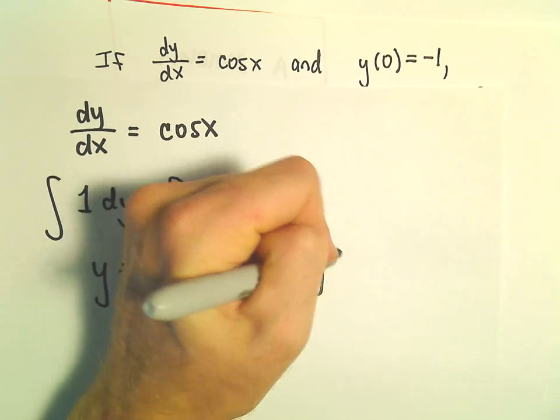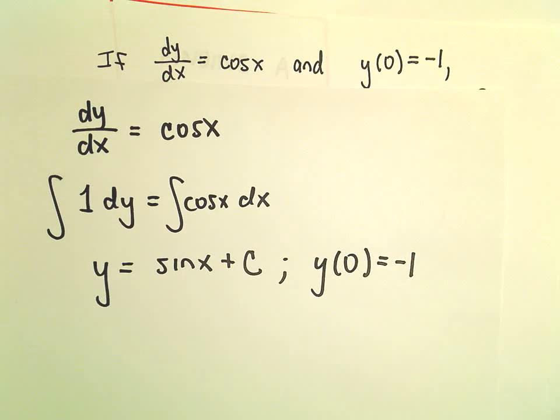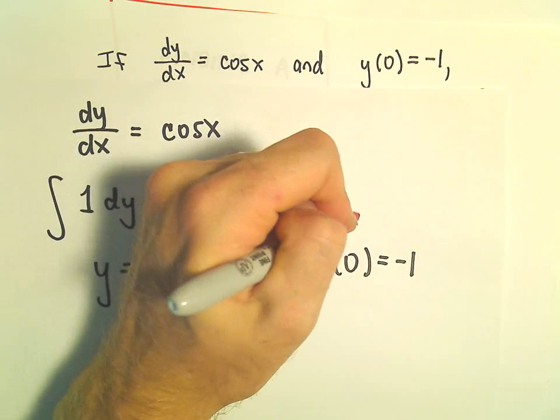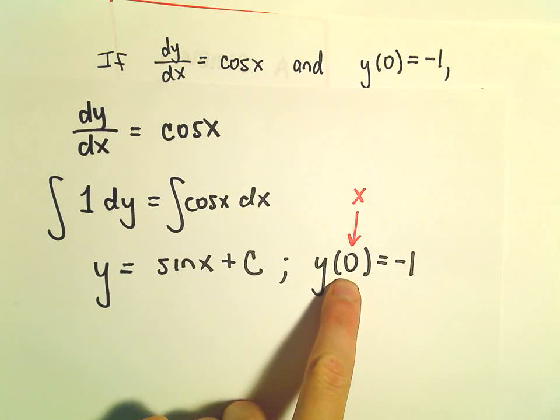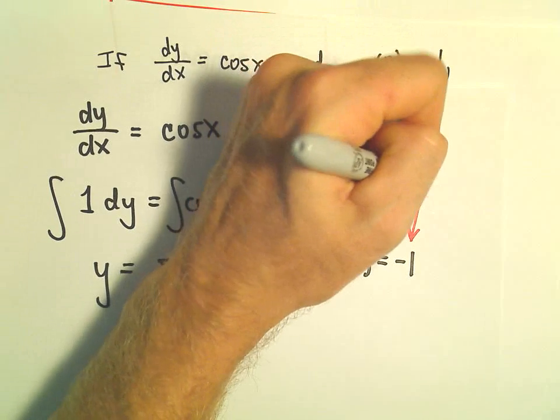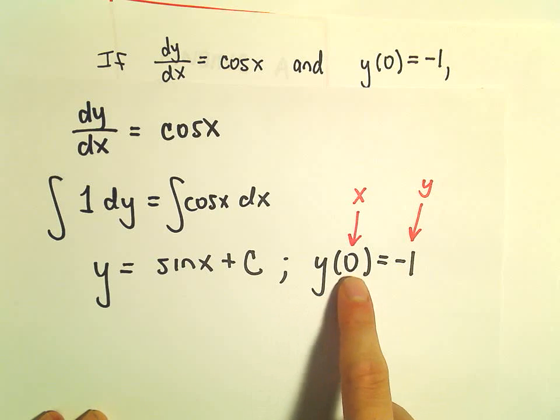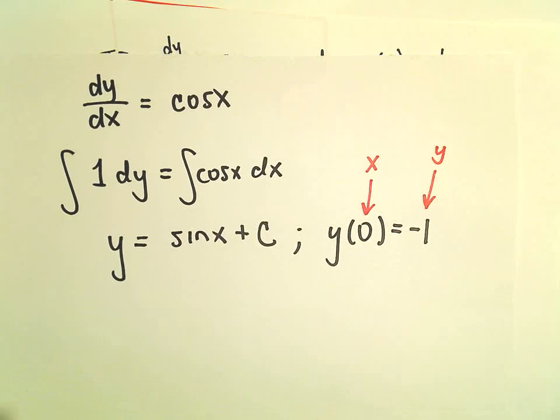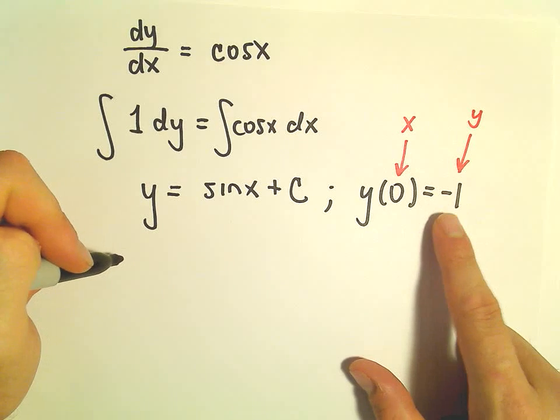And this is where we use our initial condition, y(0) equals negative 1. This notation used to bother me. The stuff next to the y represents your x value. The stuff you're getting out is going to represent the y value. I used to always want to plug this in for y, so be careful about that.